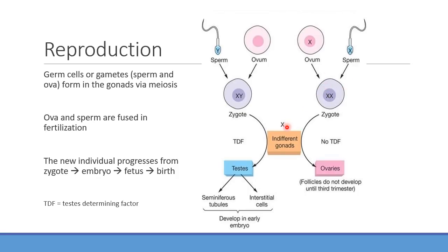As development actually occurs, you start off with these indifferent gonads — I always think that's a funny term, like the gonads are just like, 'eh, I don't care what I am, testes, ovaries, whatever.' But eventually you're going to have this TDF, this testes-determining factor. If that's present — which is the case when you have Y chromosomes — you're going to see this develop into testes. And if not, they'll actually develop into the ovaries. We'll see how that development occurs and get into the details on seminiferous tubules, interstitial cells, and the ovaries.